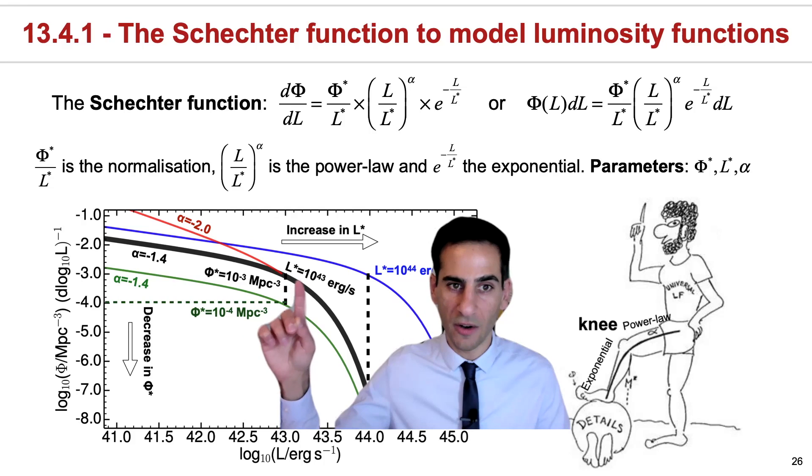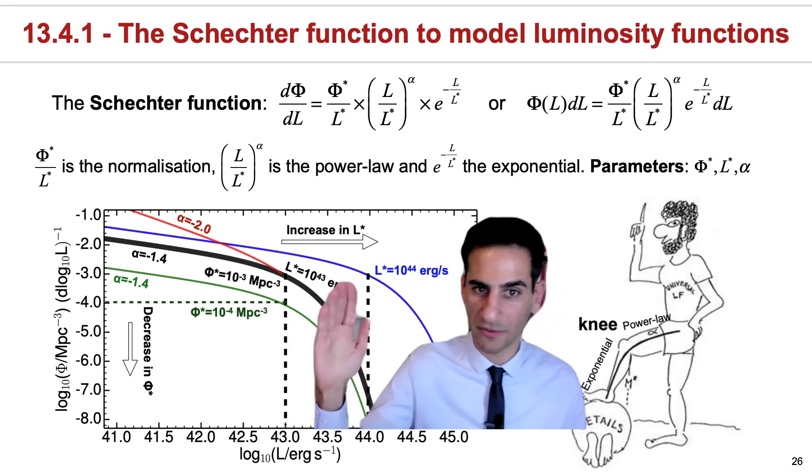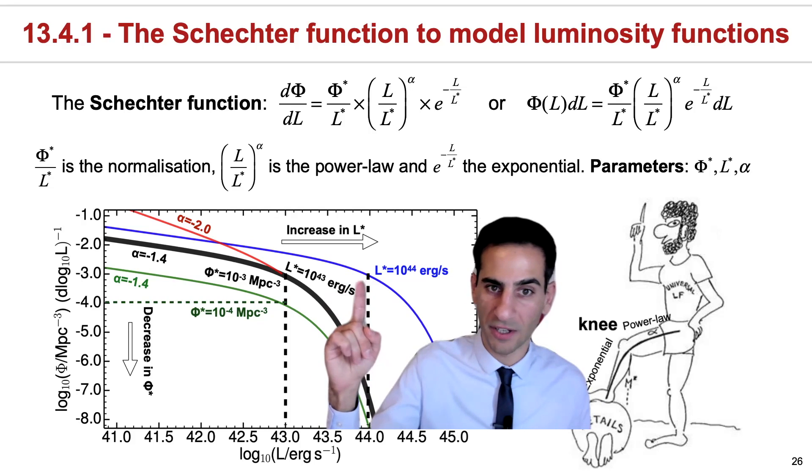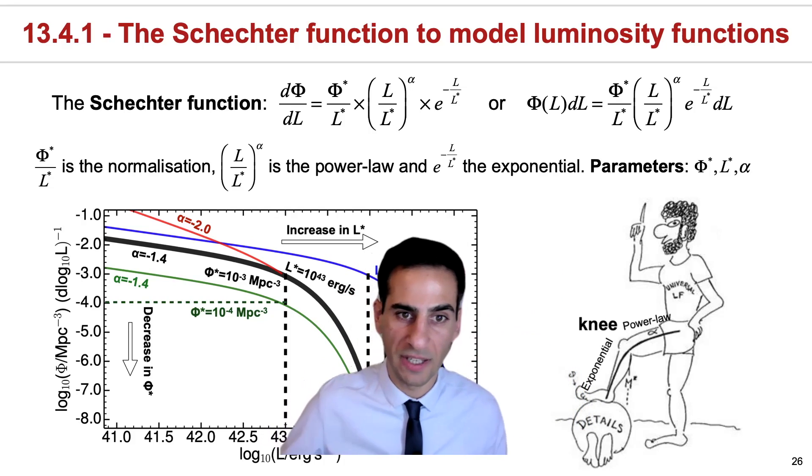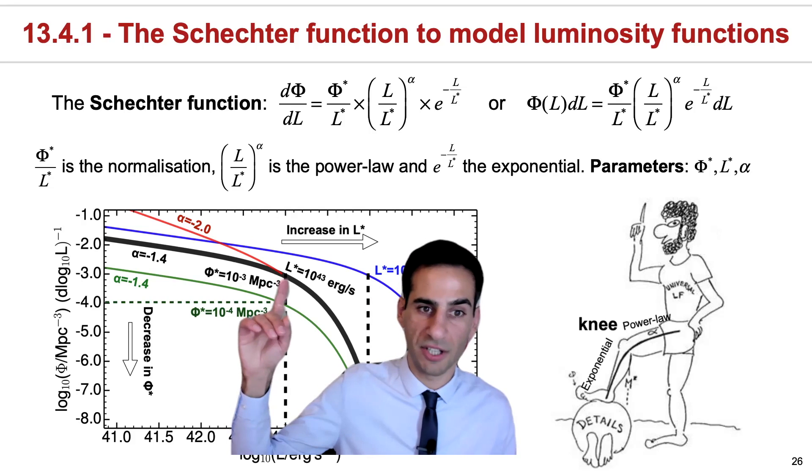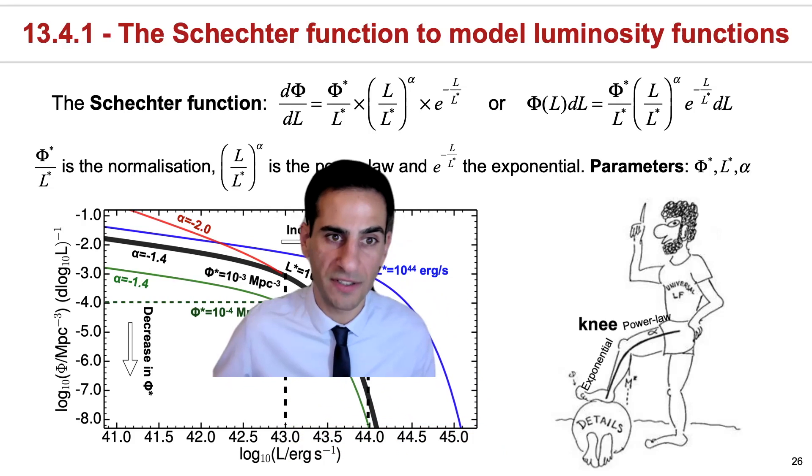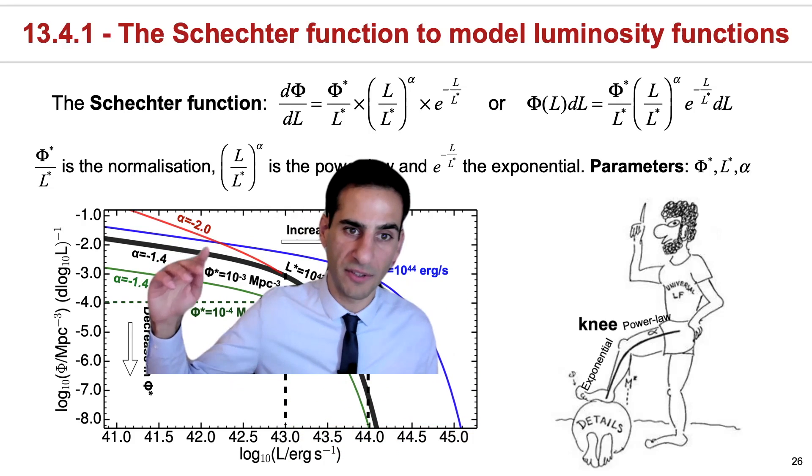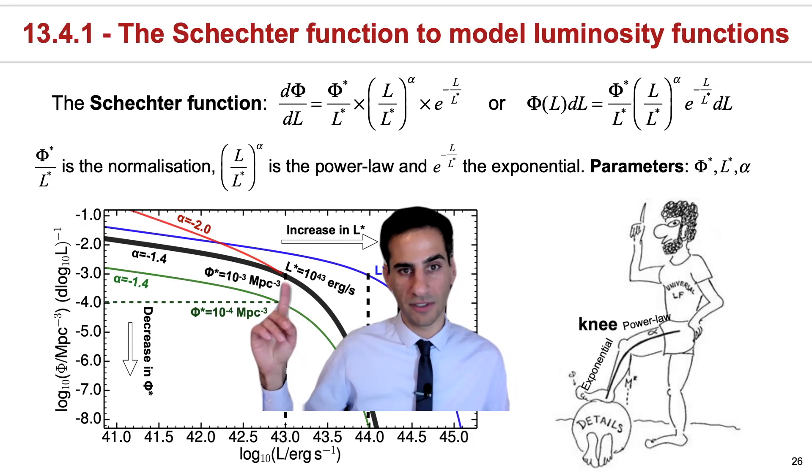If you understand these parameters and what they mean for the function, then you can very easily understand that if you change L star by, say, a factor of 10, all you're doing is transforming black into blue, so you're just shifting the function in L. Phi star will still be the same. On the other hand, if you fix L star and instead change phi star, then all you're doing to the function is just pushing it down. At the same time, if phi star and L star are fixed but what you're doing is changing alpha, all you're doing is changing the power law and making it steeper. But the knee of the function is still going to be in exactly the same position.